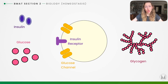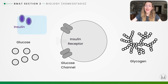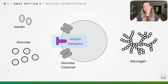To recap: there are two types of diabetes mellitus. Type 1 is caused by a lack of insulin or no insulin being produced by the pancreas, whereas type 2 is caused by a lack of sensitivity to the insulin hormone — the insulin receptors are less responsive.